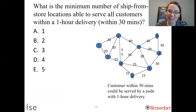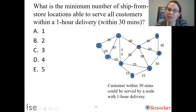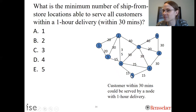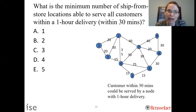The correct answer is two. If you build a ship-from-store capability at location 3, you can cover neighborhoods 3, 1, 2, 4, and 5 within 30 minutes. If you also build at location 8, you can cover neighborhoods 8, 9, 7, and 6 within 30 minutes. All nine neighborhoods are covered within a 30-minute driving distance, so the minimum number of locations needed is two.